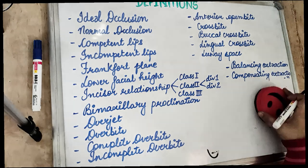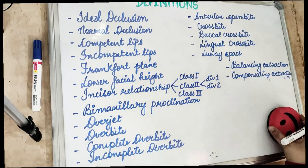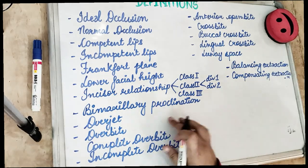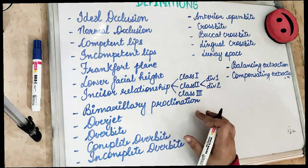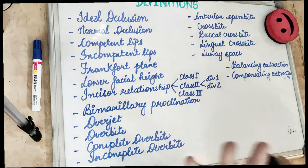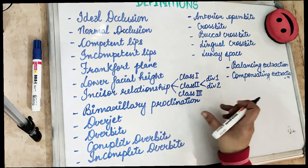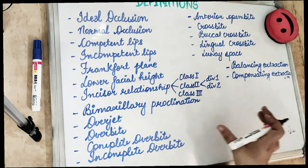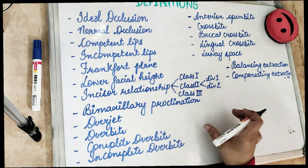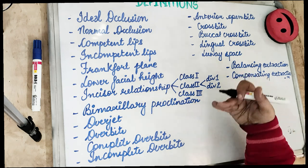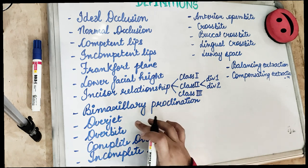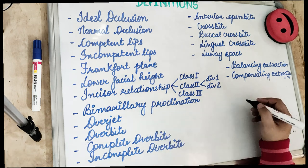Bimaxillary proclination is when both the upper and lower teeth are together proclined. The molar relationship remains the same, but both the upper and lower incisors are proclined forward.